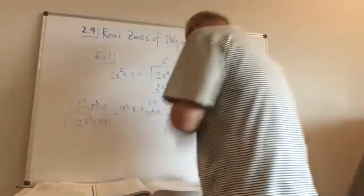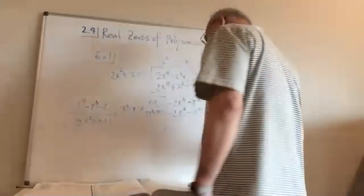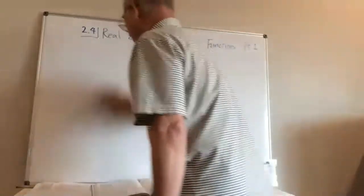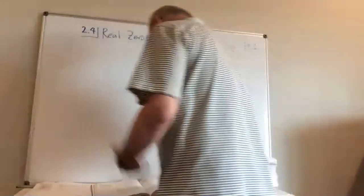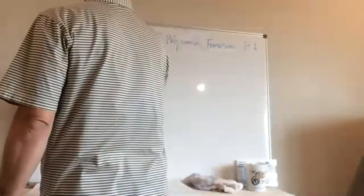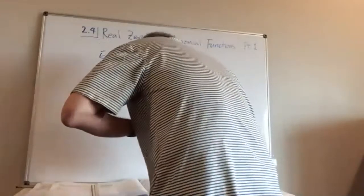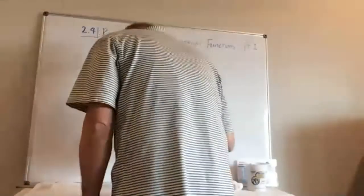Now in the middle of page 198 we're going to talk about the Remainder and Factor Theorems. The Remainder Theorem states: if a polynomial f(x) is divided by x - k, then the remainder is f(k).